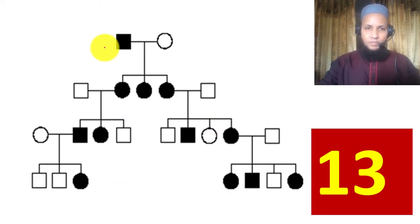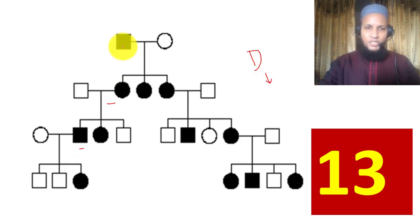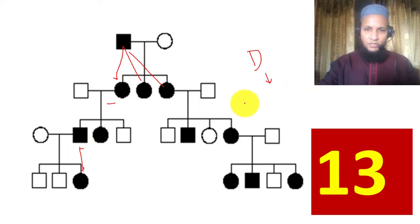Example 13: There is no skipping of generation — all generations are affected, so this is dominant. We can see sex biasness by crisscross pattern: this man has three daughters, all are affected; this man has one daughter, also affected. Therefore this is X-linked dominant.